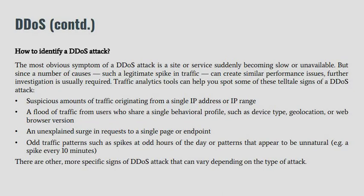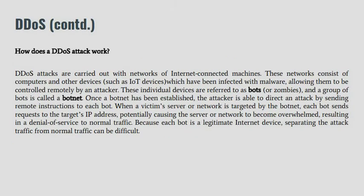Hello students. Previously we studied about how a DDoS attack happens. The participants involved in a DDoS attack are the attacker, the botnet, and the target machine. What the attacker tries to do is control the botnet in order to send malicious packets to the target machine, so that the target machine server goes down or the server is not able to respond to various requests.